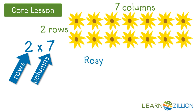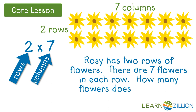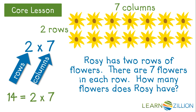To write a story to match this array, we could think about having two rows of flowers. Rosie has two rows of flowers. There are seven flowers in each row. How many flowers does Rosie have? Rosie has fourteen flowers. Two times seven is the same as fourteen.